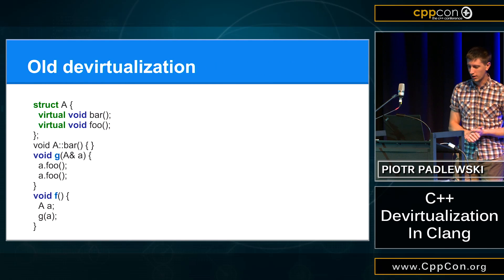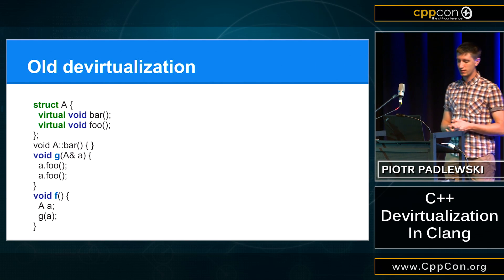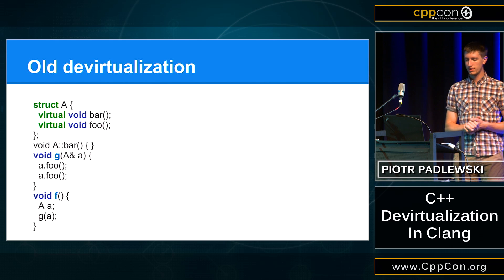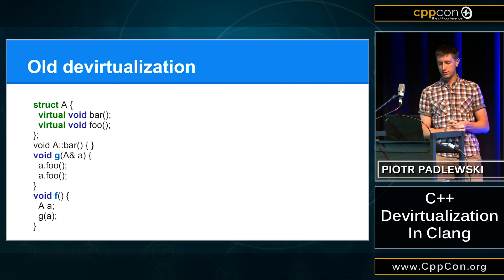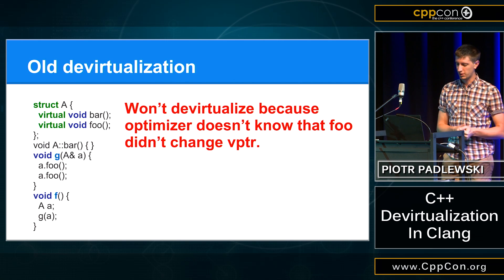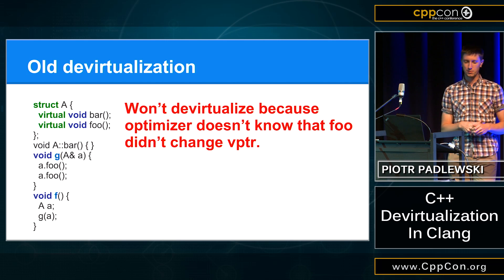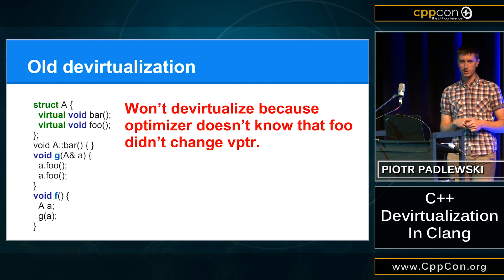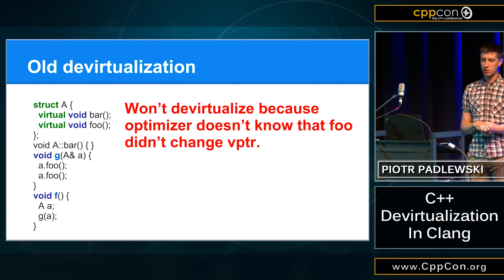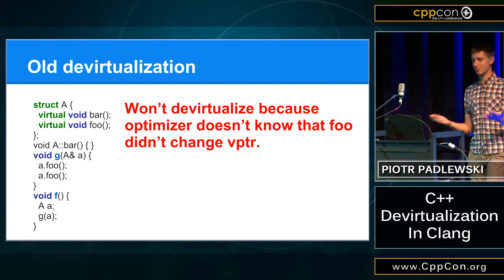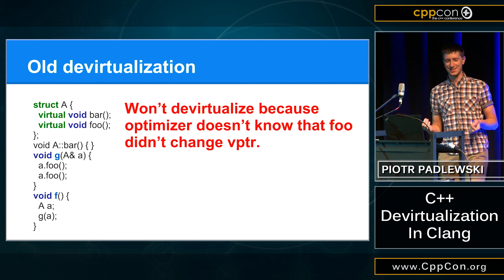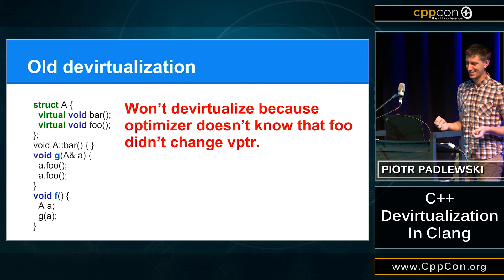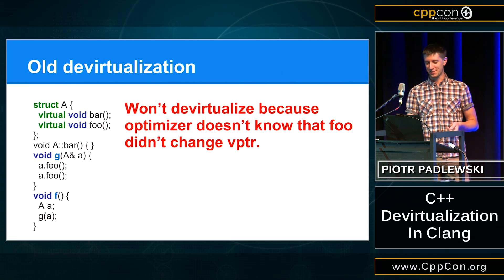Another example: if we have two virtual calls, then in this example we will be able to only devirtualize the first one. This might sound crazy, but this is because the optimizer doesn't know that the V pointer will not change after we call a virtual function. You might feel like this is obvious that it will not change, but this is C++ and you can do some crazy things. I will show you later how to do it.